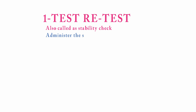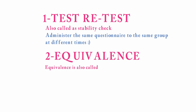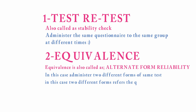Number one is test-retest, also called a stability check. In this case we administer the same questionnaire to the same group but at different times. Number two is equivalence, also called alternate form reliability. In this case we administer two different forms of the same test; however, the different forms have different questions but they construct the same meaning.